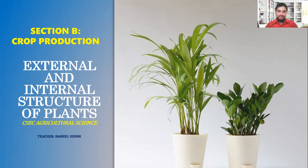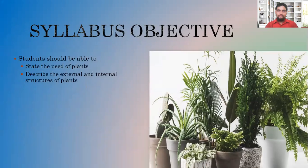We are now going to look at the external and internal structure of plants. The syllabus objectives we are trying to fulfill are: to state the uses of plants, and to describe the external and internal structures of plants. By the end of this lesson you should be able to complete these two tasks and fulfill these two objectives.